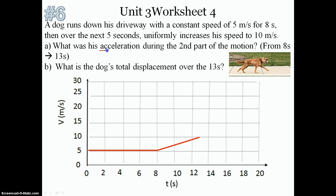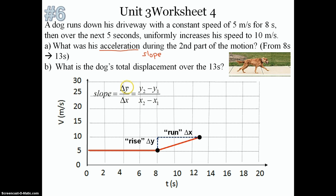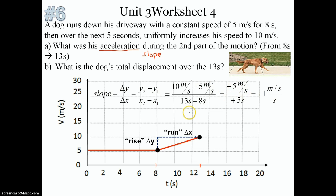To find the acceleration graphically, we find the slope of the velocity versus time graph. We identify two points during the second part of the motion and find rise over run — change in y divided by change in x, or y₂ minus y₁ divided by x₂ minus x₁. The final velocity is 10 m/s, initial velocity is 5 m/s, final time is 13 seconds, and initial time is 8 seconds. So 10 minus 5 gives plus 5 m/s, and 13 minus 8 gives plus 5 seconds, so acceleration is plus 1 meter per second per second.